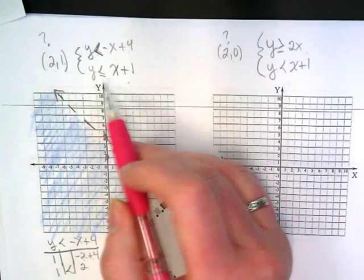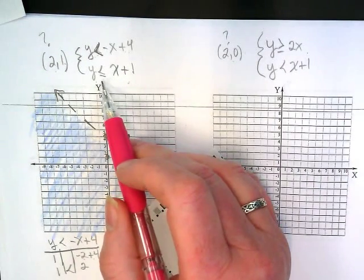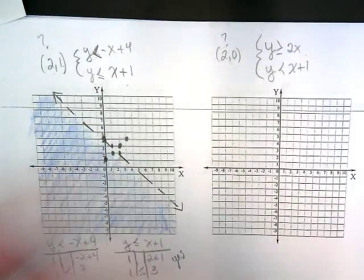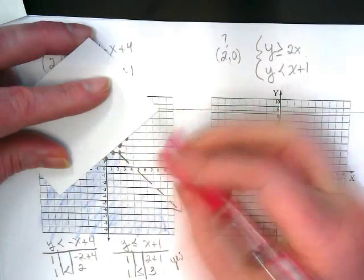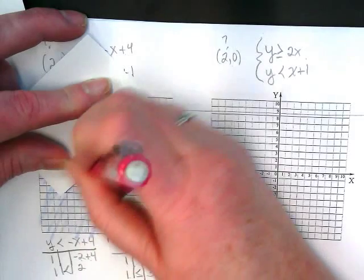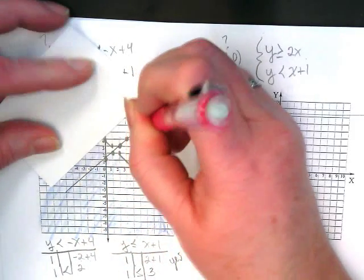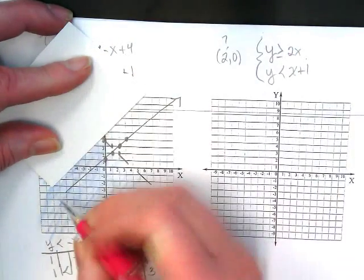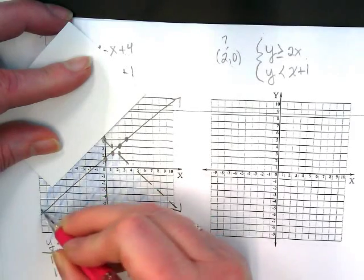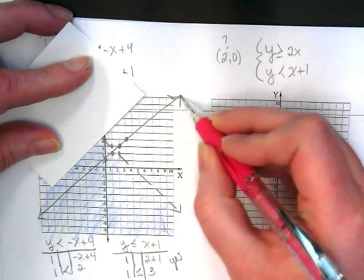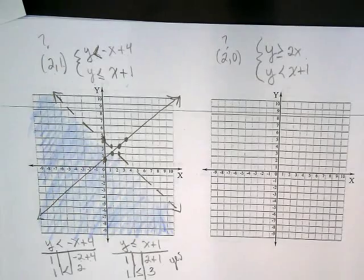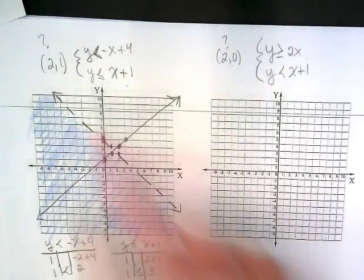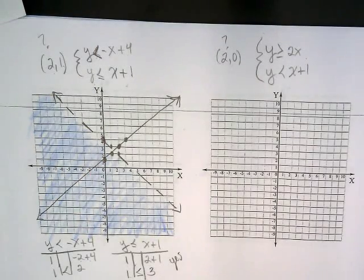Is it a dashed line or a solid line? It is a solid line. And where are we shading? Above the boundary or below the boundary? Below. Below, it's again below. Using your other color.